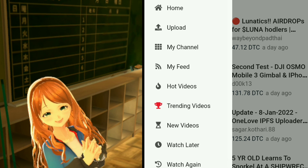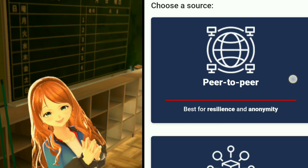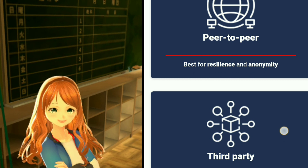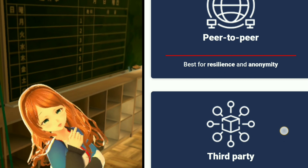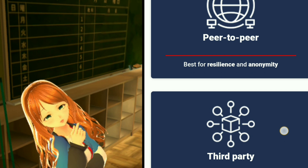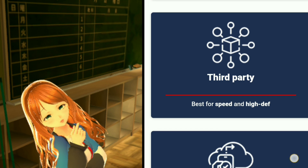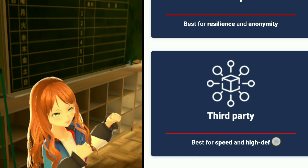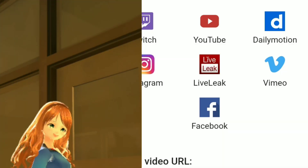This page will open up with three options of uploading to choose from: peer-to-peer, third party, and file upload. We will talk about peer-to-peer later. File upload means you can directly upload from your computer, and third party means you can upload from Vimeo, YouTube, and some other social media directly.